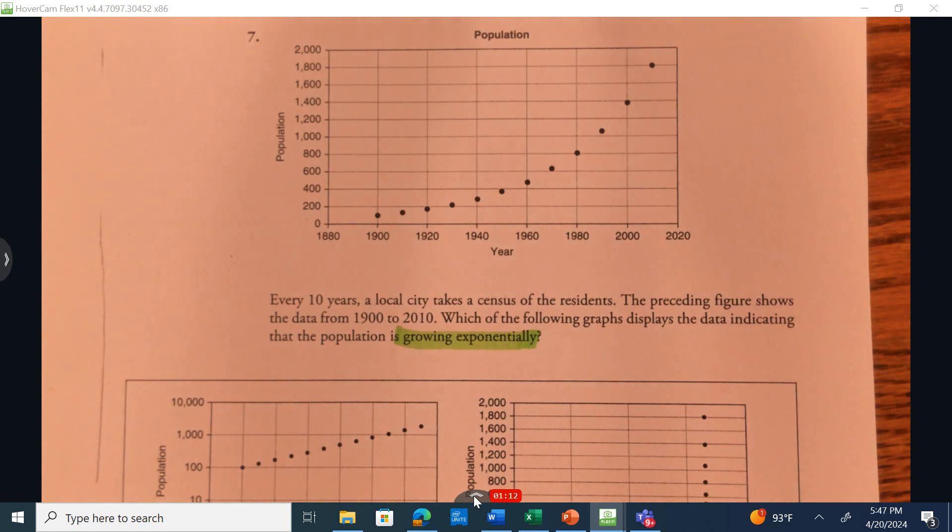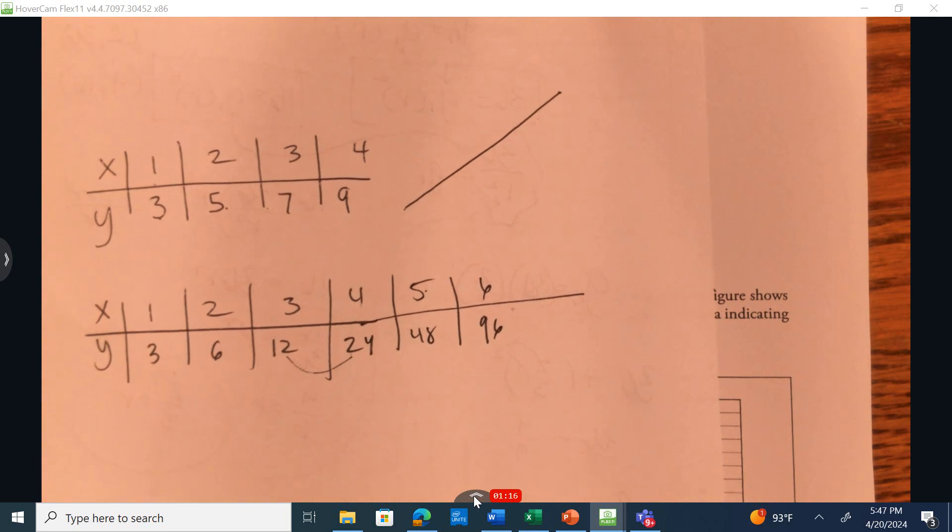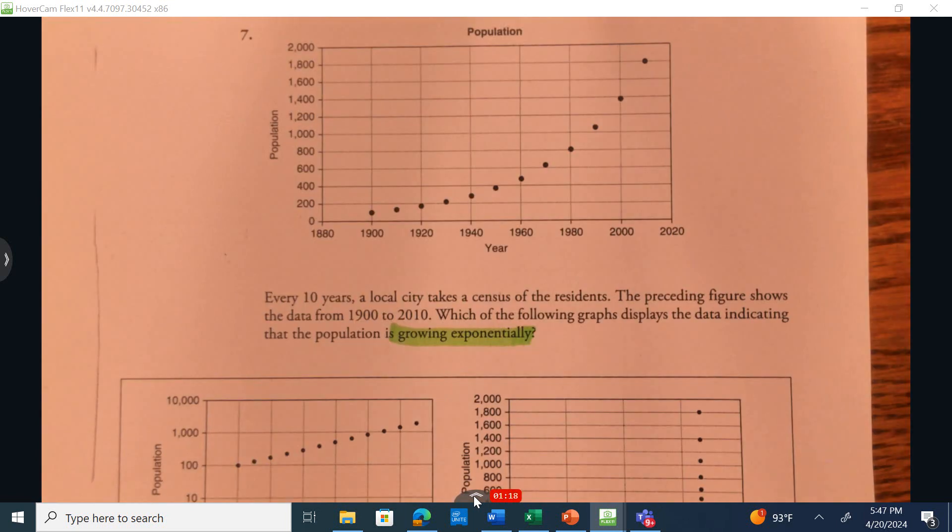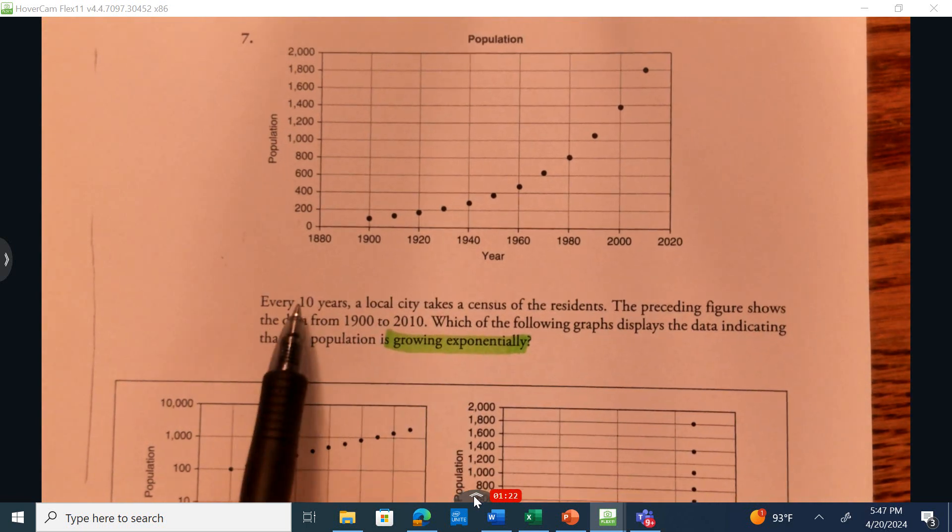Well, the first thing is, just like when I looked here, my x's remain consistent no matter what type of graph I'm looking at. So it should be consistently going up by 10, like it states, every 10 years.